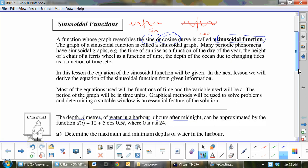We've got depth of meters, D, of water in a harbor, T hours after midnight can be approximated by the function D(T) = 12 + 5cos(0.5T). That's a pretty intimidating statement. What I want to do is I want to get the 12 out of there. So this turns into depth = 5cos(0.5T) + 12.